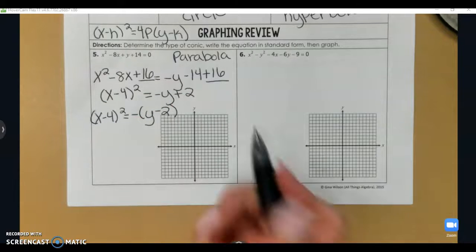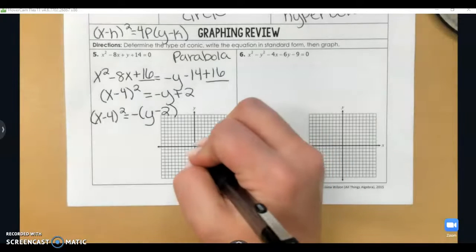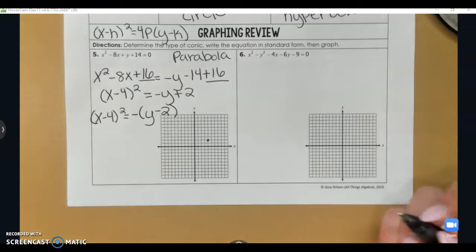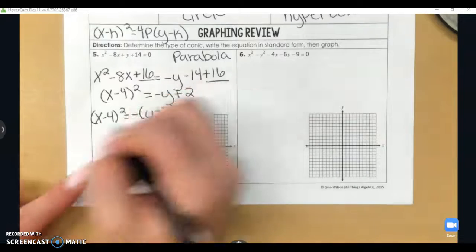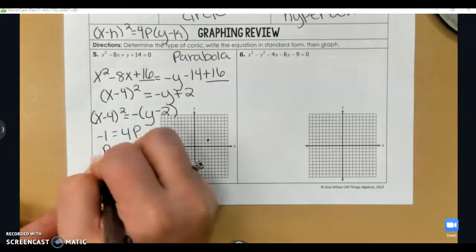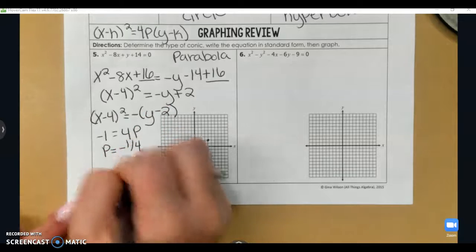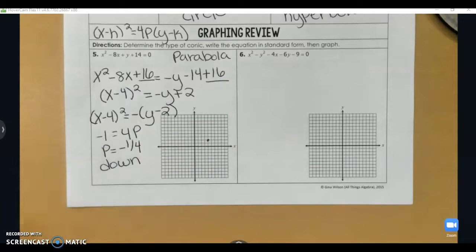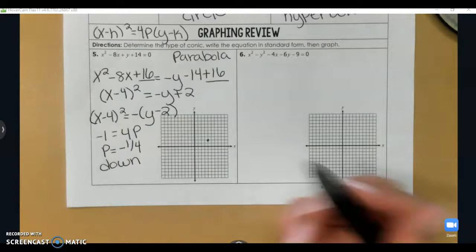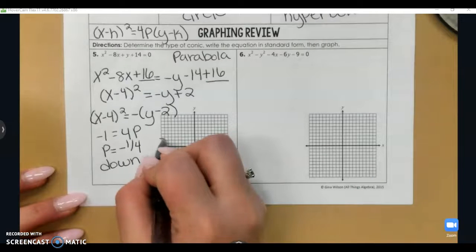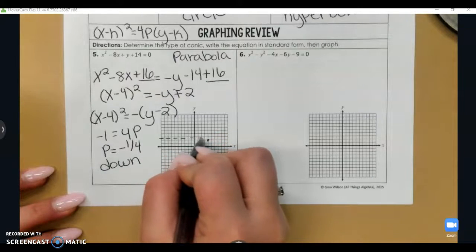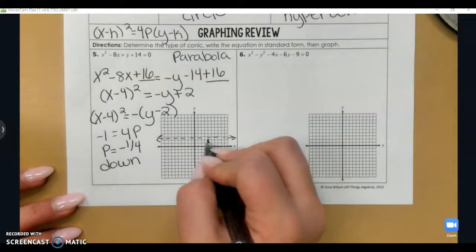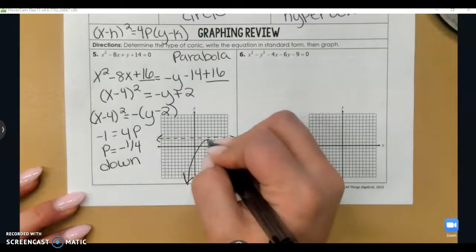Now let's graph it. The vertex is at 4, 2. The negative one equals 4p, so p equals negative one-fourth. The negative tells me the parabola opens downward, and one-fourth tells me how far the directrix and focus are from the vertex. The directrix is one-fourth above the vertex and the focus is one-fourth below, giving a parabola opening down.